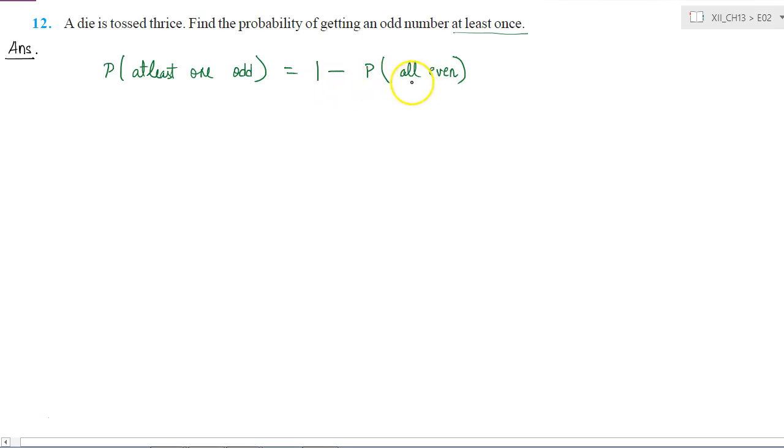This is what I am going to do. Now to find the probability of getting even number in every throw, it is given that a die is tossed thrice. We know that all the different throws are independent of each other.